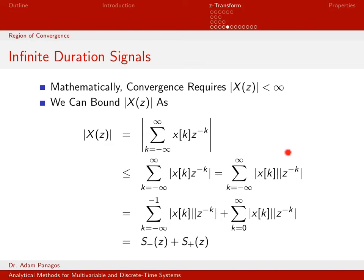I've taken this double-sided sum and split it into two pieces. The summation over all negative times I'll call S sub minus. The summation from K equals 0 to infinity I'll call S sub plus — the positive sum and the negative sum.